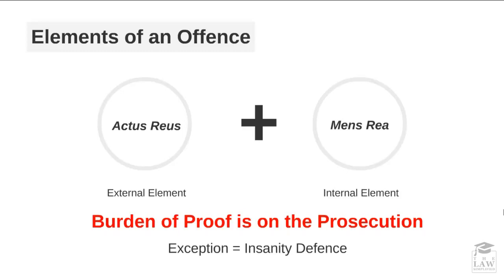In this lesson, we are going to move on with the outline of criminal law by looking at the various elements of an offense. As we discussed earlier, there are many different crimes that can be committed and various places in which they are defined, either in statute or in common law. However, irrespective of what crime may be committed and where the definition lies, two main elements have to be fulfilled.